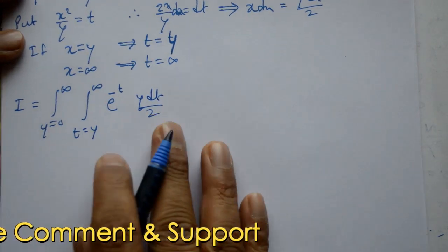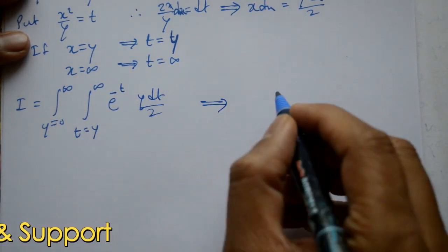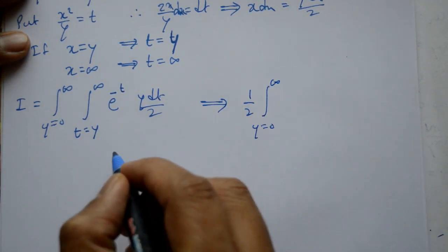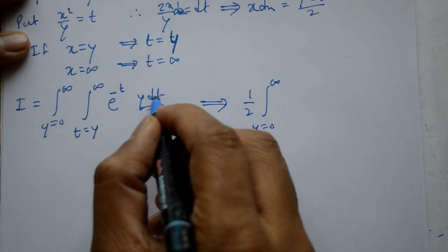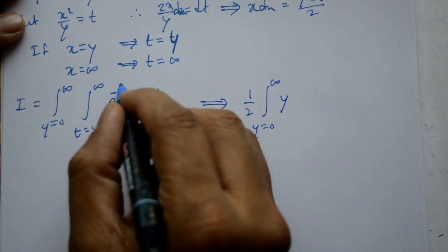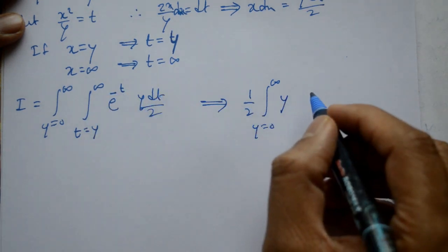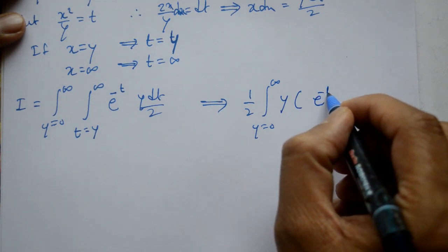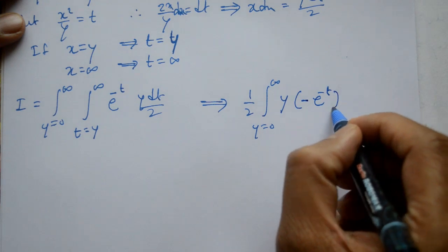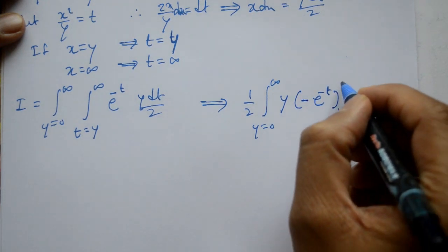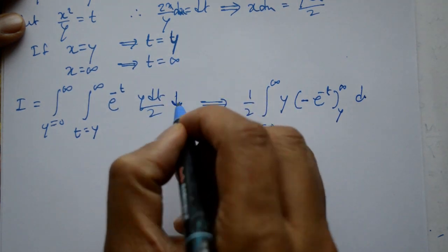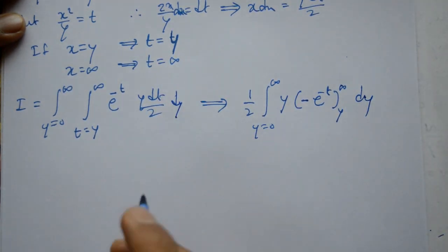This is equal to one by two, bahar lenge. Integration of y = 0 to infinity. Now integrate with respect to t — y is constant. So e raised to minus t, divided by minus one. Limits t = y to infinity apply karna padega. Baad mein dy bhi hai.